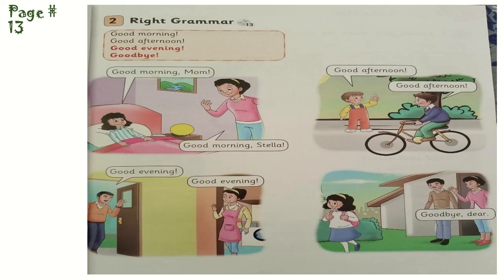In the afternoon you can see both kids — one is on a bicycle and one is standing near the tree — greeting each other: 'Good afternoon, good afternoon.' This is the way you greet one another. In the morning you say 'Good morning,' and at noon you say 'Good afternoon.'